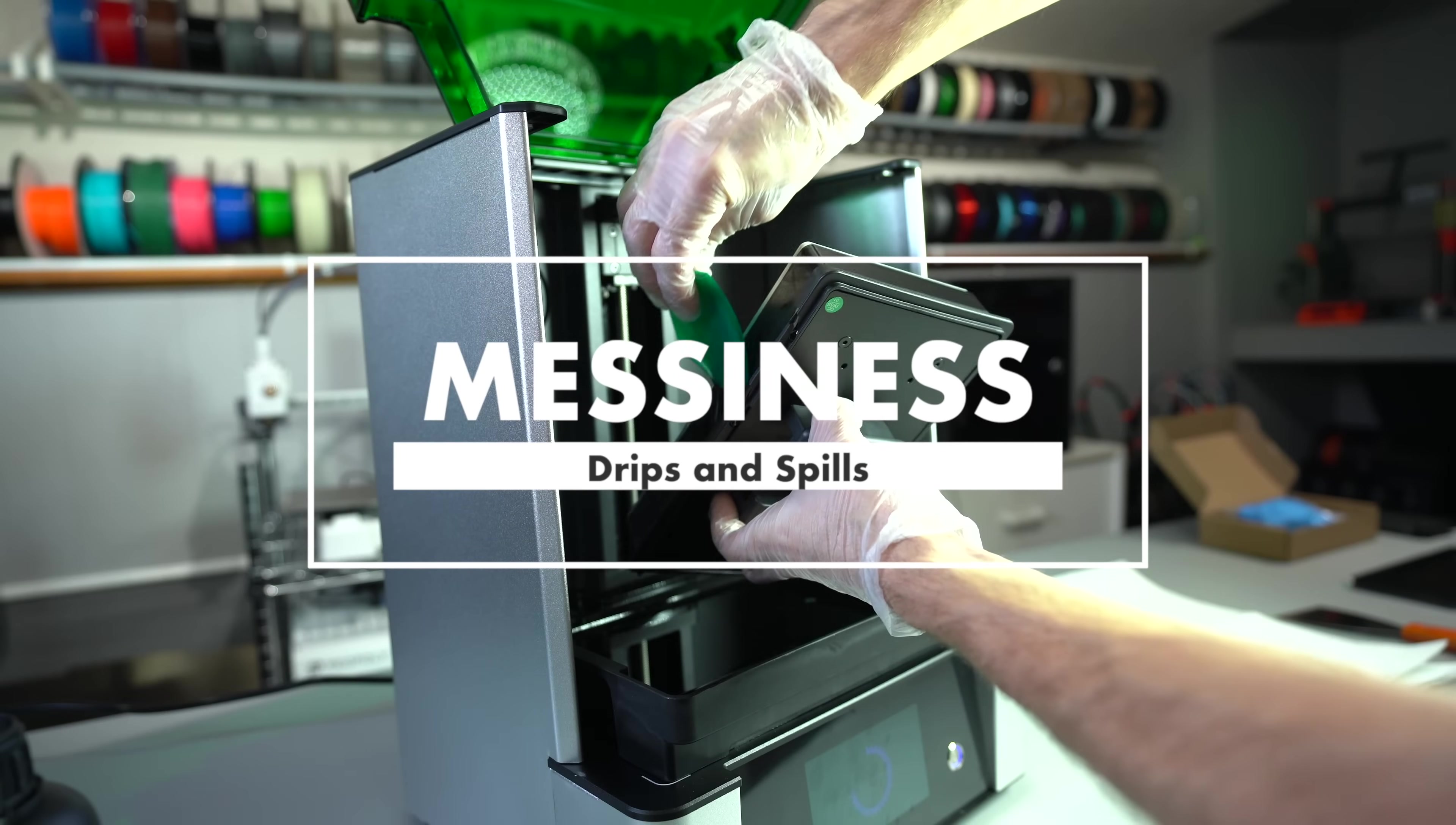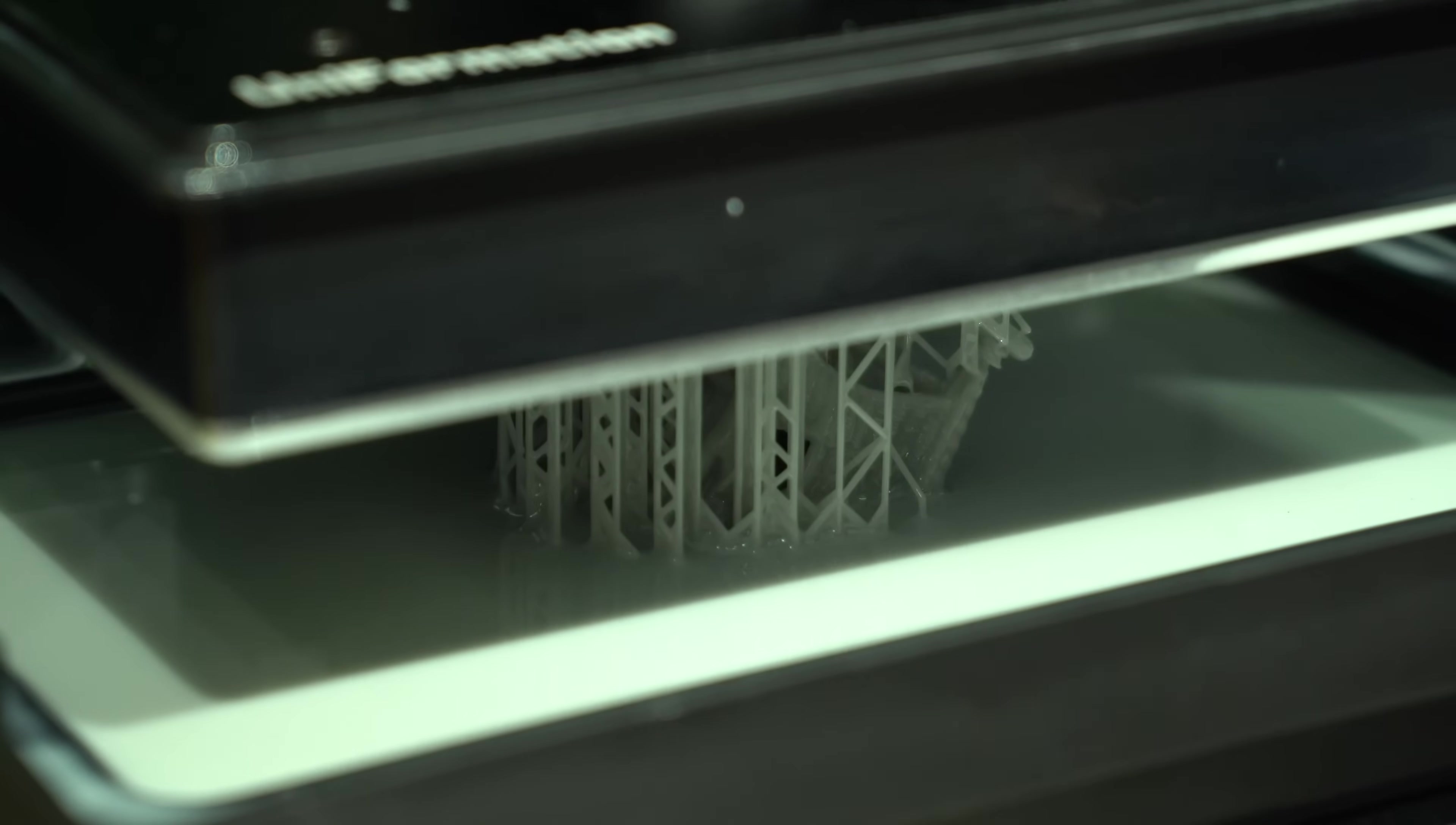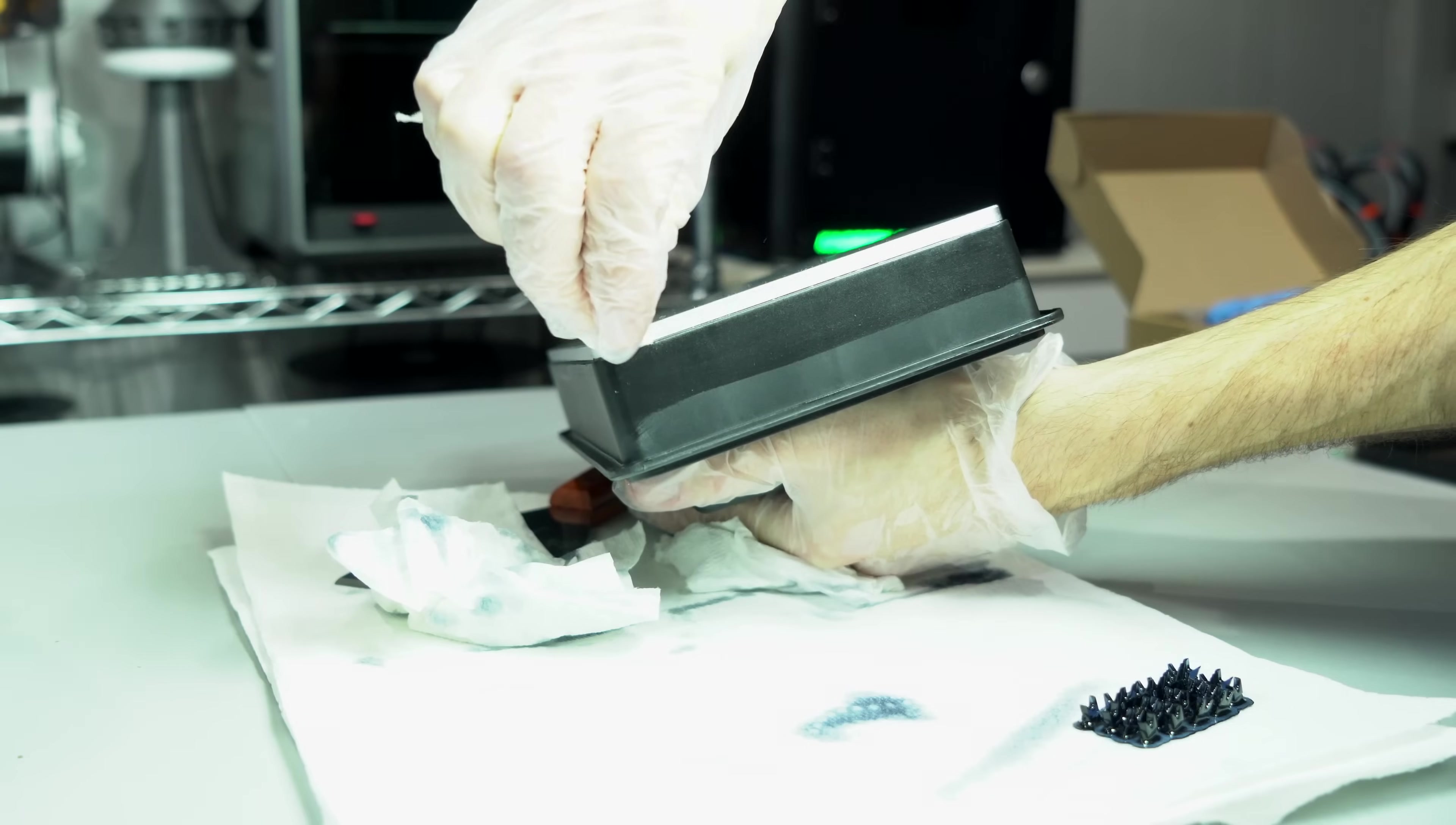Messiness. The GK2 build plate has a lip on it that is meant to prevent resin drips during transport. It's also considerably thicker than an average build plate, which means that the top surface is never submerged in the resin, keeping it clean. The vat is deep, helping to prevent spills. These features work together to help reduce the mess of the printing process. And in this regard, it is successful. But there is a drawback.